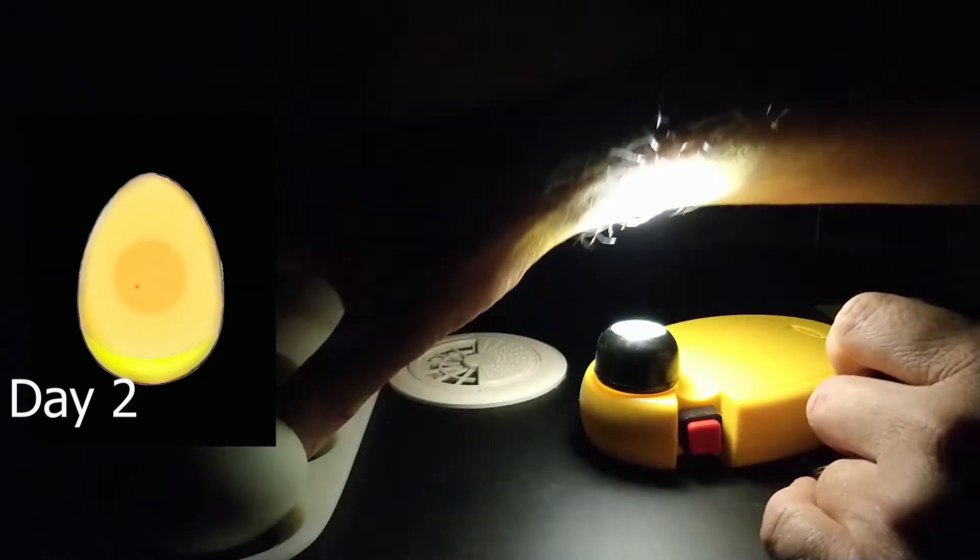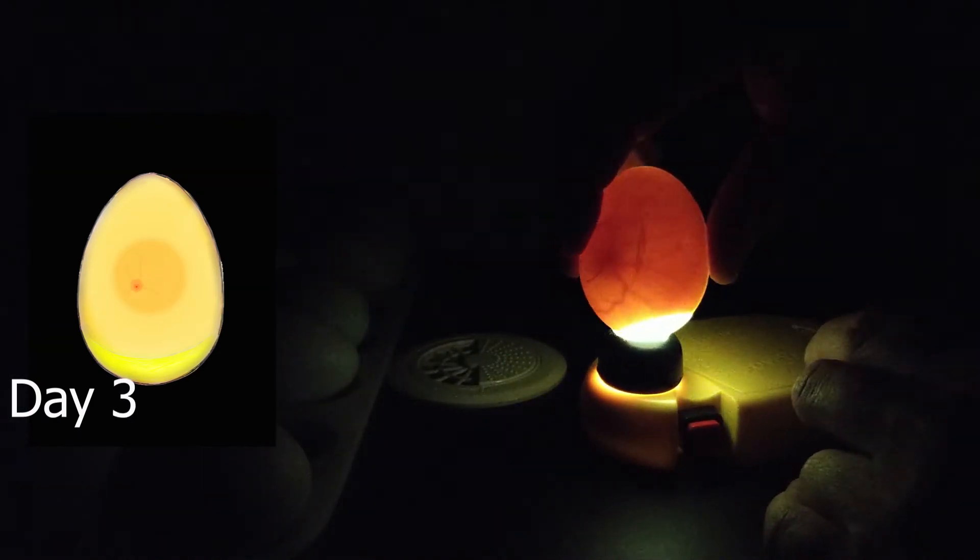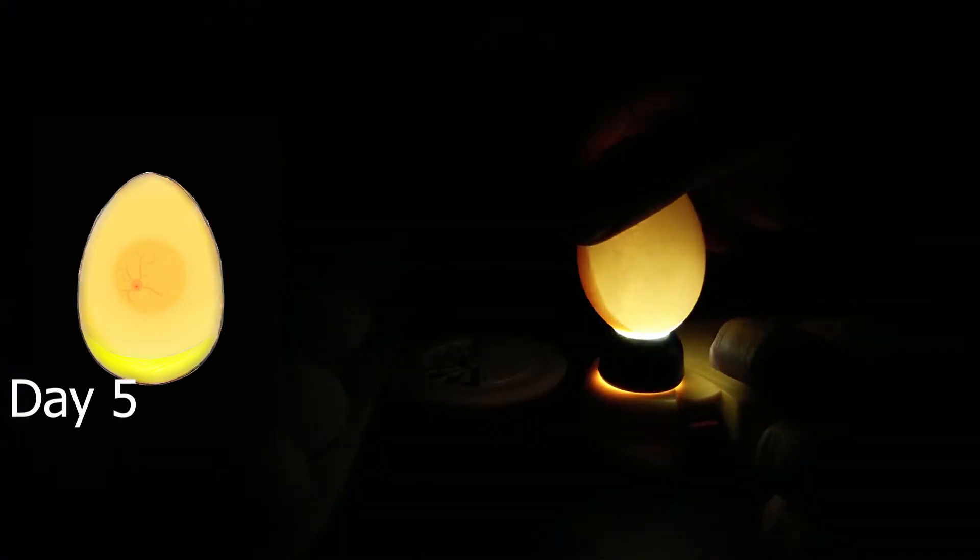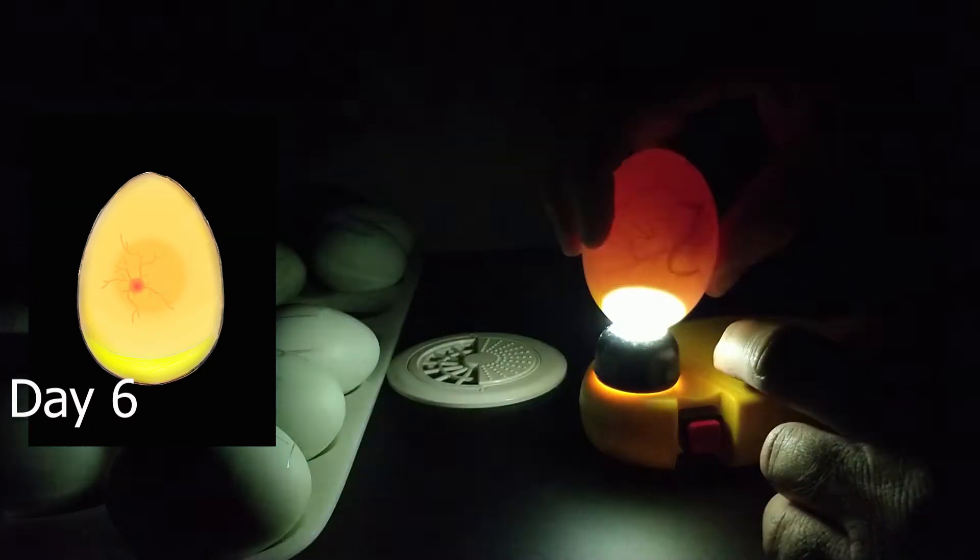So as we're speeding through 6 to 14, we can see that the fertility is very high. Remember if it wasn't fertile and it hadn't been developing, we would just see a floating sort of yolk sac in the middle of the egg. Remember we skipped egg 13 because it was cracked and damaged, so we went straight to 14.